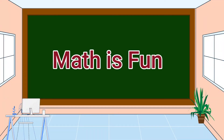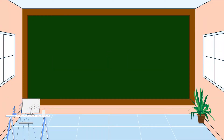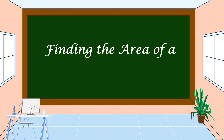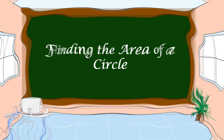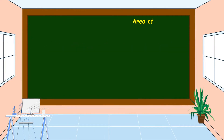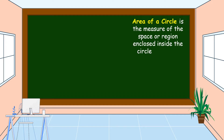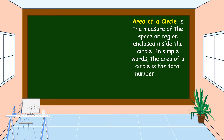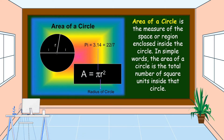Hello everyone, welcome to Math is Fun. Our lesson for today is all about finding the area of a circle. The area of a circle is the measure of the space or region enclosed inside the circle. In simple words, the area of a circle is the total number of square units inside that circle.